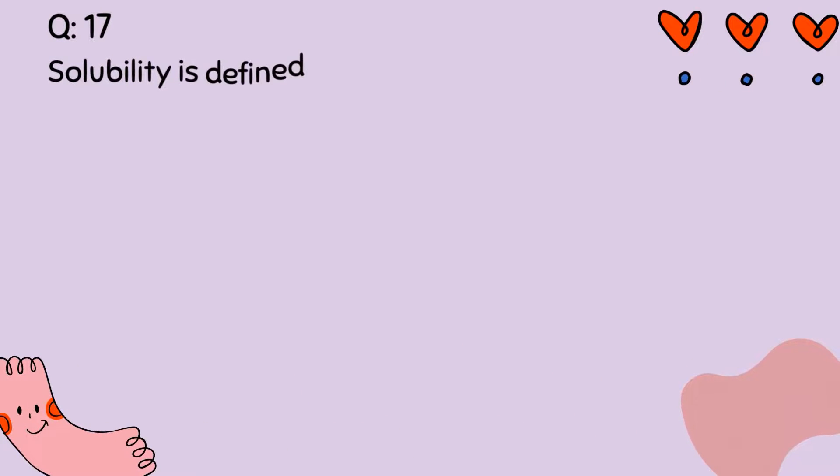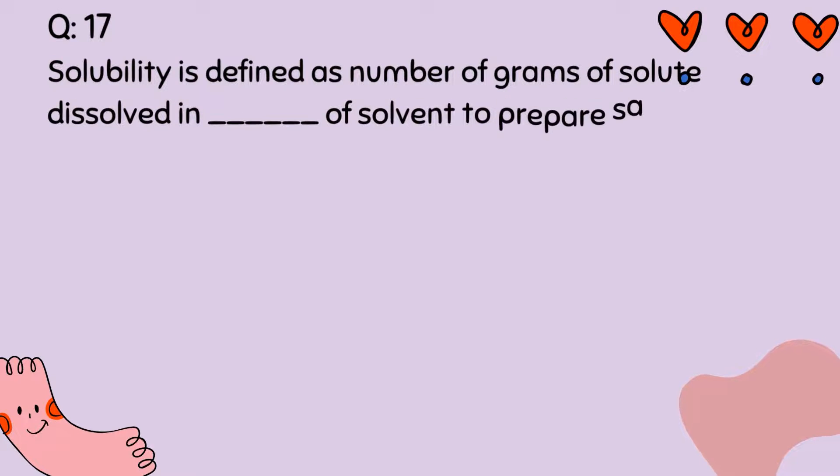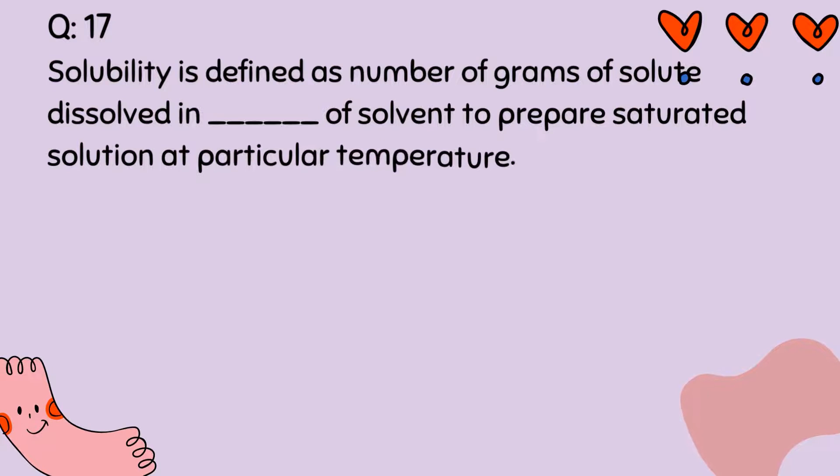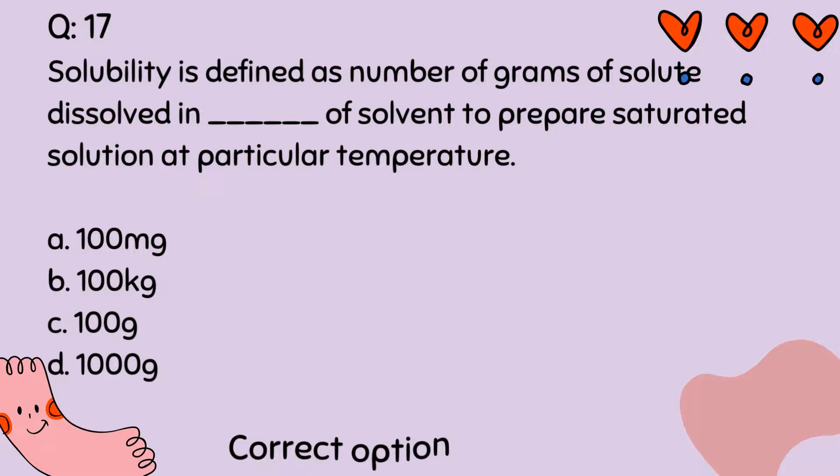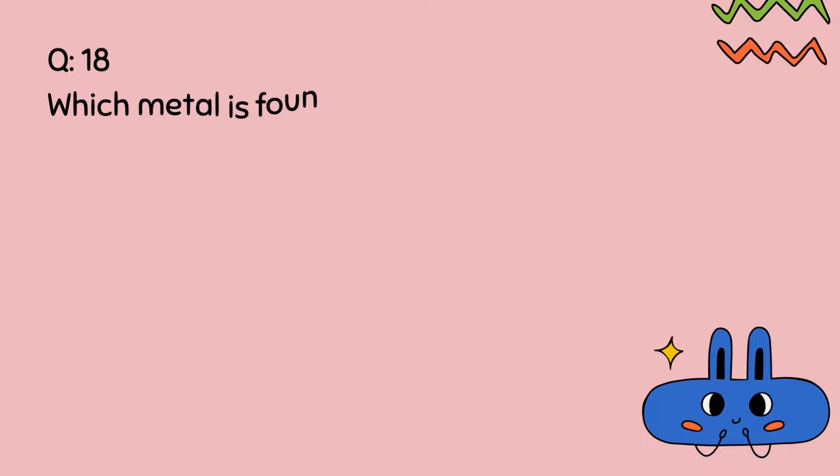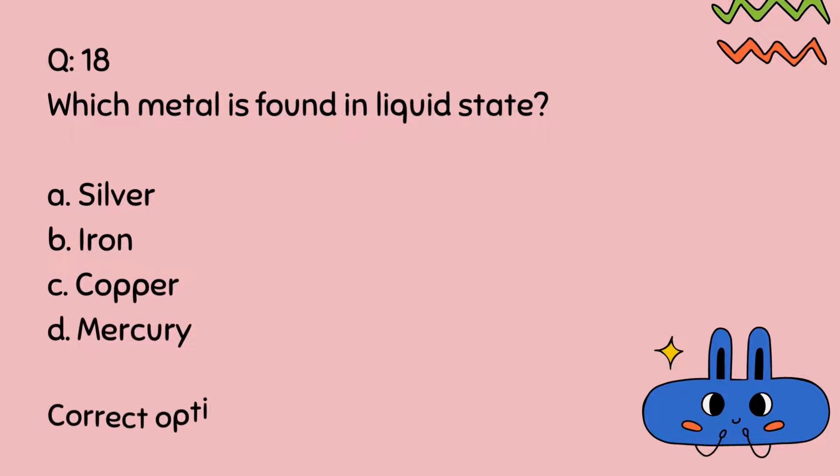Question number 17. Solubility is defined as number of grams of solute dissolved in dash of solvent to prepare saturated solution at particular temperature: A, 100 mg, B, 100 kg, C, 100 g, D, 1000 g. Correct option is C. Question number 18. Which metal is found in liquid state? A, Silver, B, Iron, C, Copper, D, Mercury. Correct option is D.